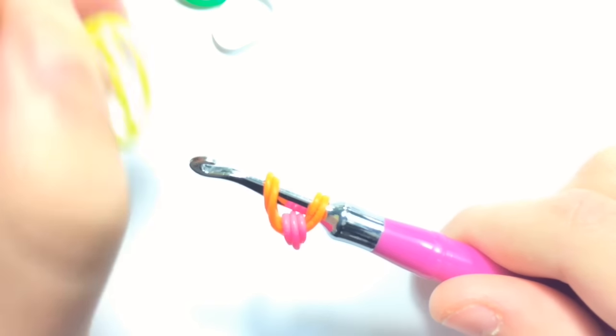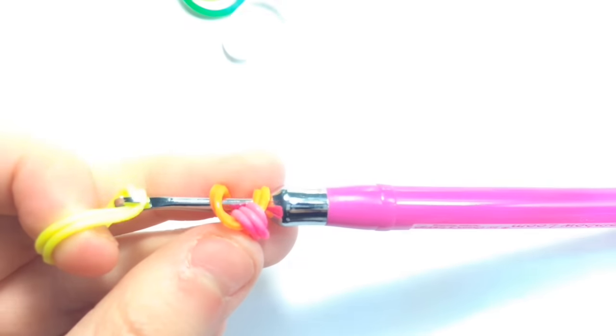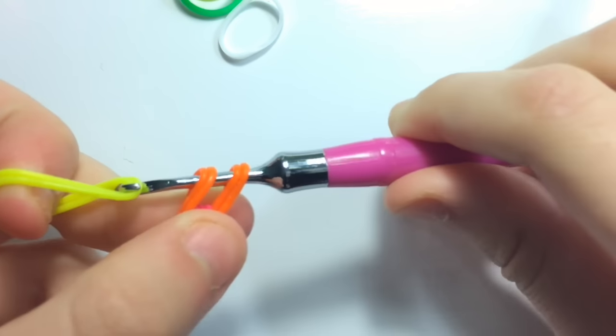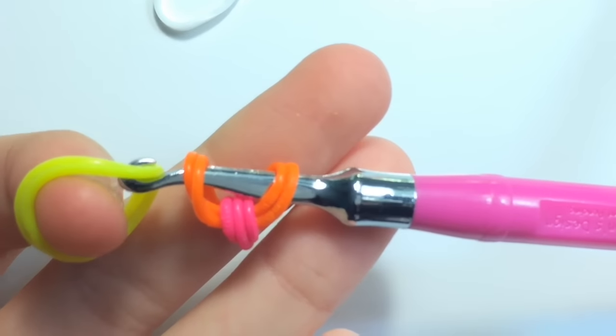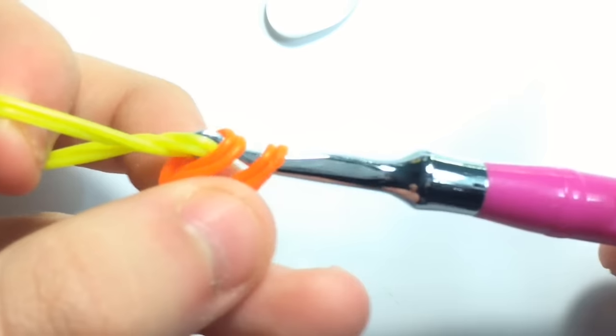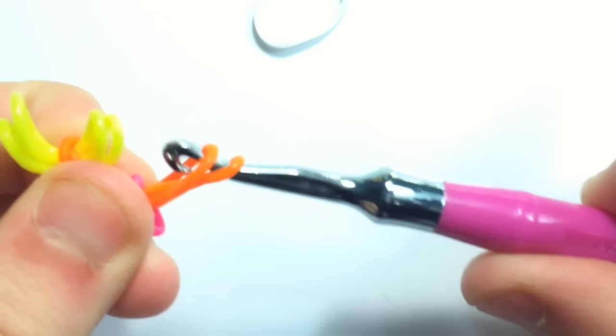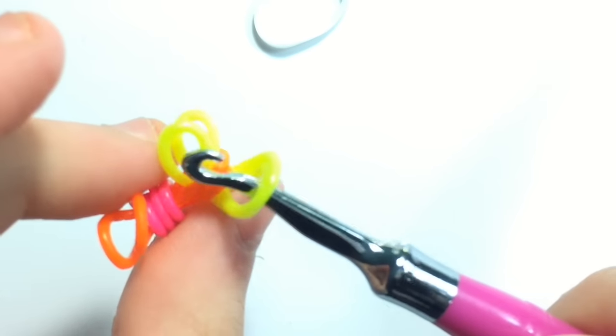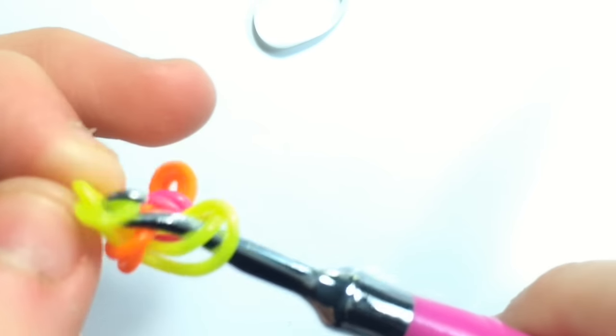Next, take two of your next color. And I'm not going to say two bands every time, just assume that we're using two. And pull it through only the first side. So just this side. And it's a little more difficult with using double bands. And then you're going to slide your hook out carefully and then turn the design over and replace it back on your hook.